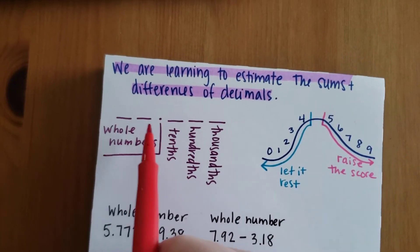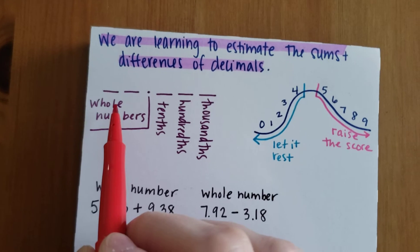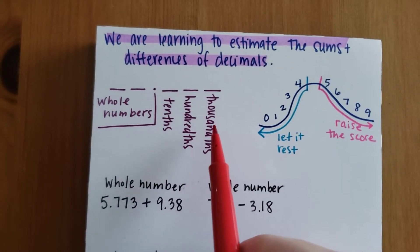I'll remind you that the numbers here to the left of the decimal are whole numbers, and then we have tenths, hundredths, and thousandths.